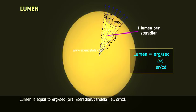Lumen is equal to erg per second per steradian per candela, that is S.R.P.C.D.